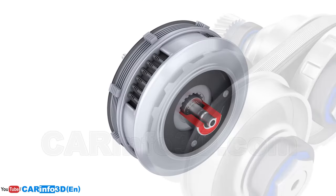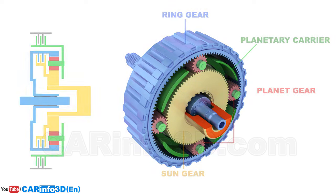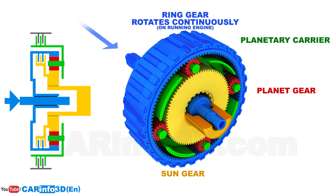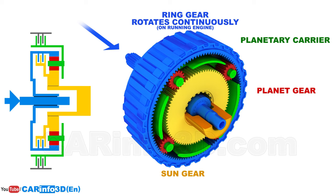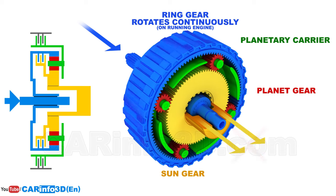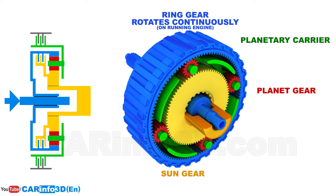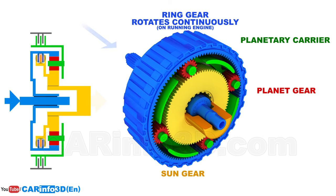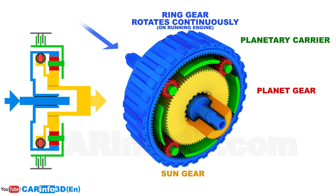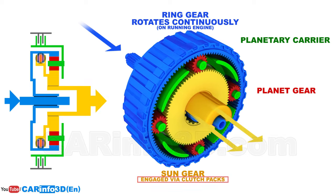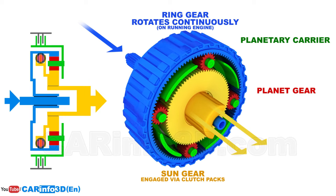Let's have a look at this model. You can observe a simple planetary gear with a ring gear that revolves continuously while the engine is running. At that point, the force is not transmitted to the driving pulley. When the forward gear is engaged, the ring gear continues to rotate, but this also engages the sun gear, and the force is then transferred to the driving pulley.